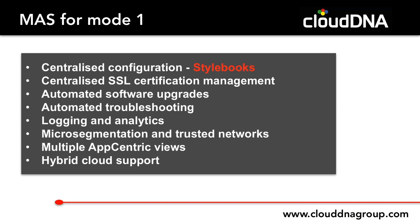Automated software upgrades are another key feature. Think about upgrading an HA pair of NetScalers today: crack open the HA pair, upgrade the secondary, test it, verify it, migrate traffic over, test again, go live, then upgrade the primary and flip back. Having this whole process automated with rolling upgrades to HA pairs completely eliminates downtime and reduces operational overhead and risk.